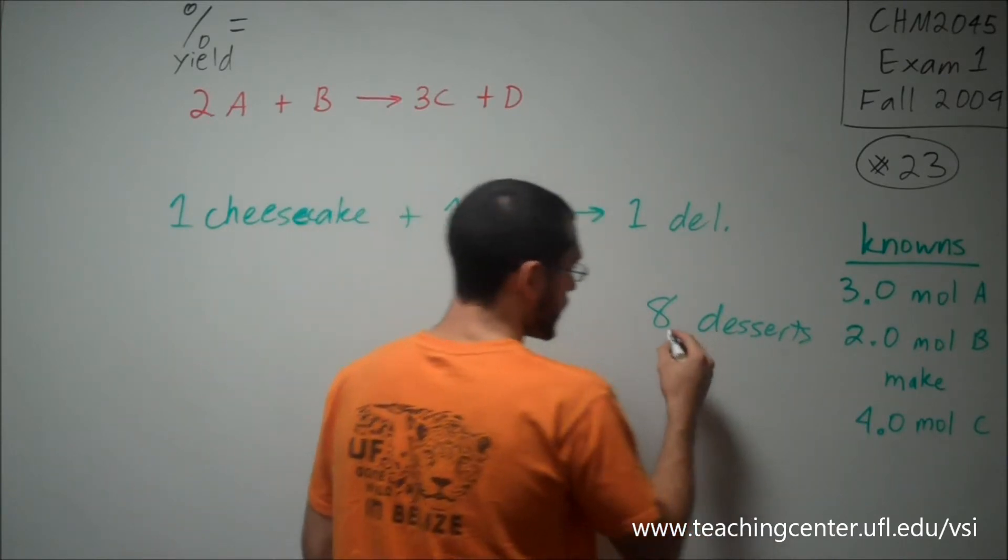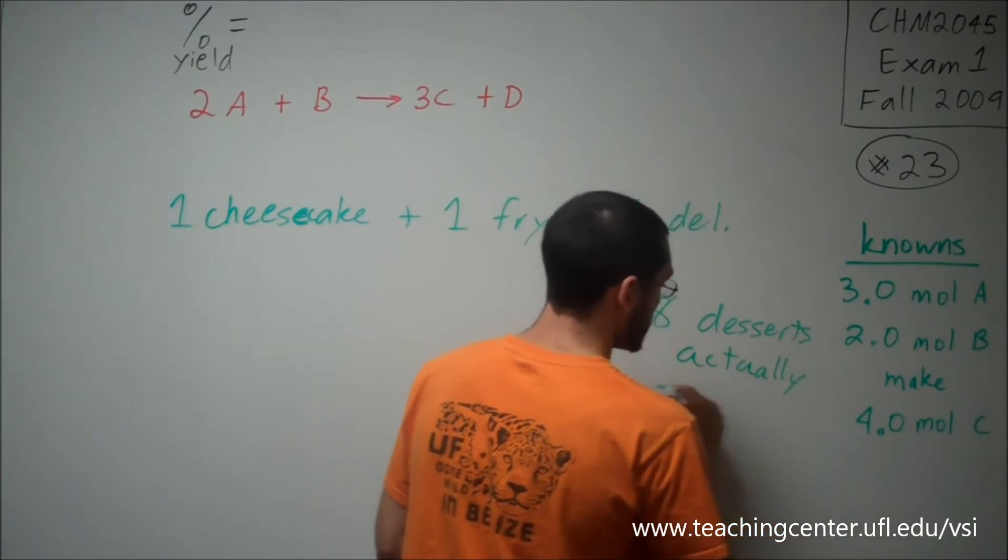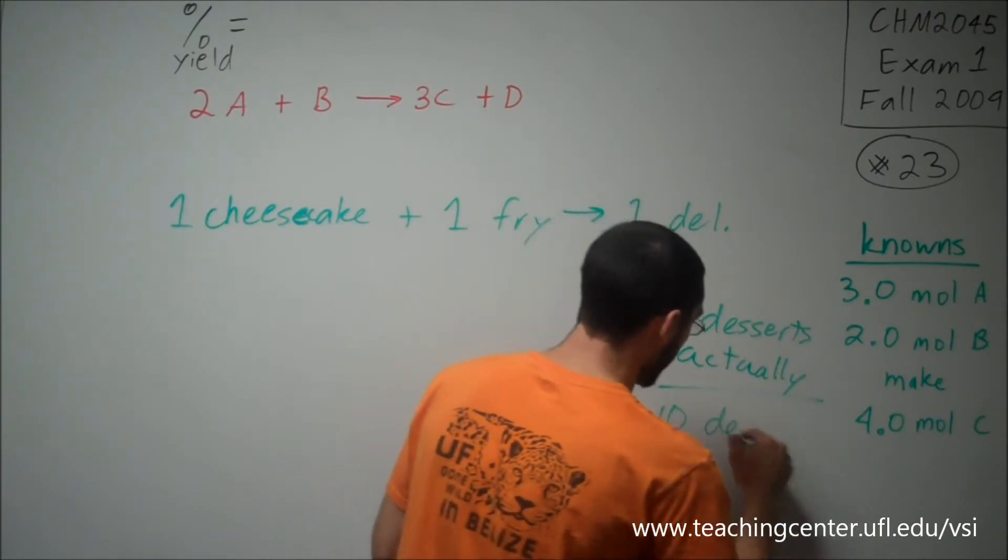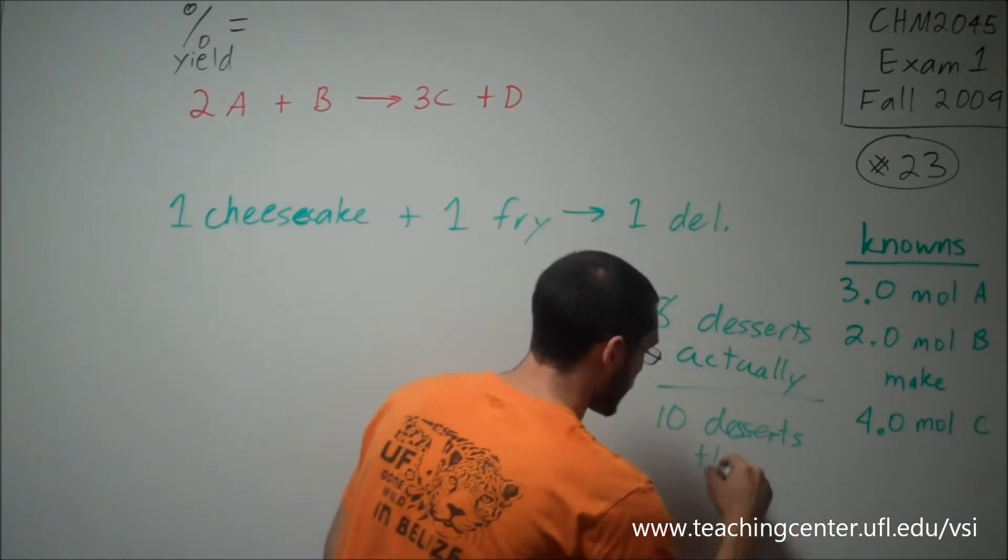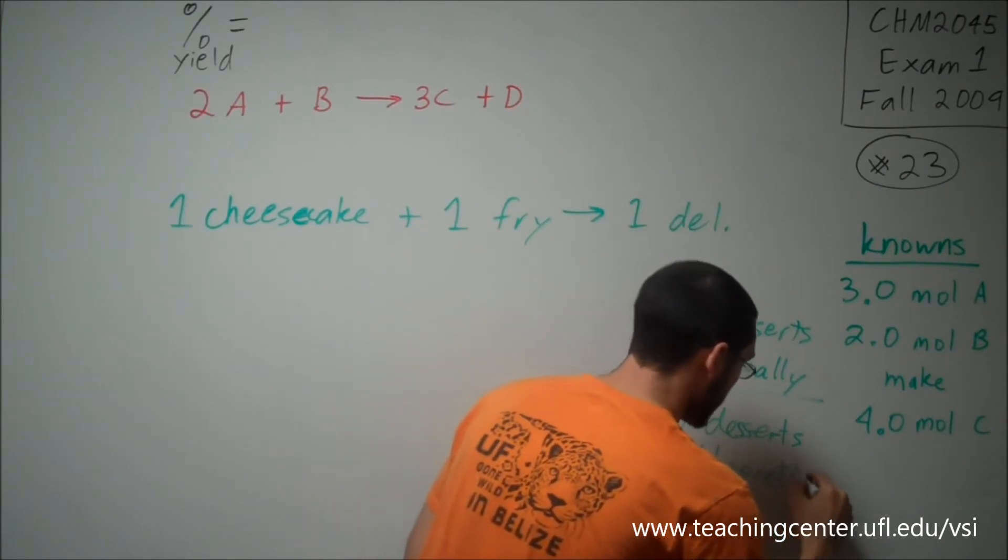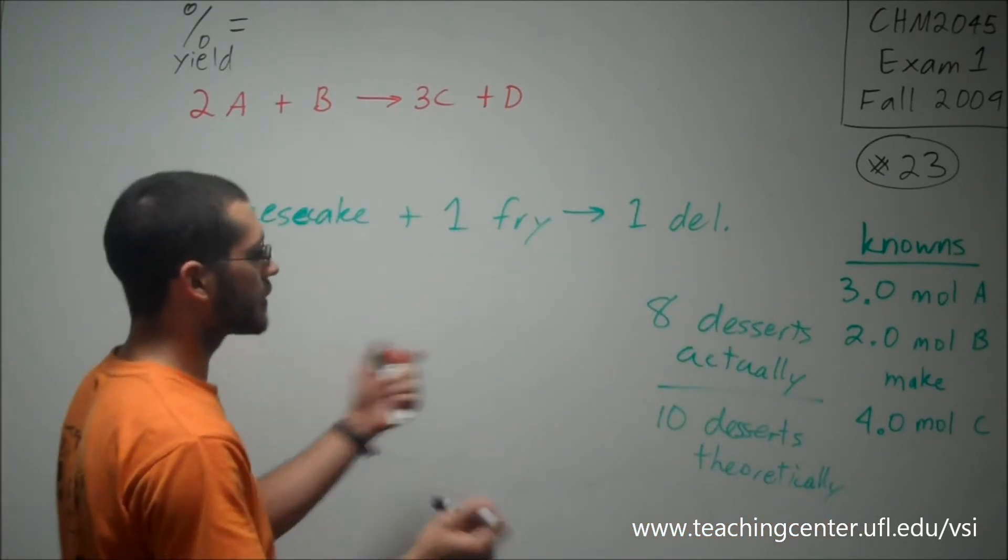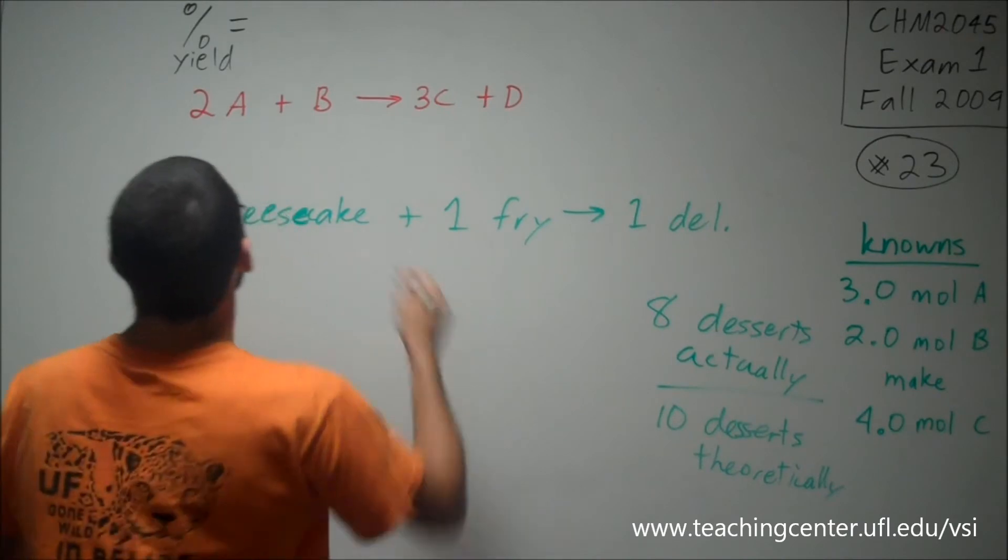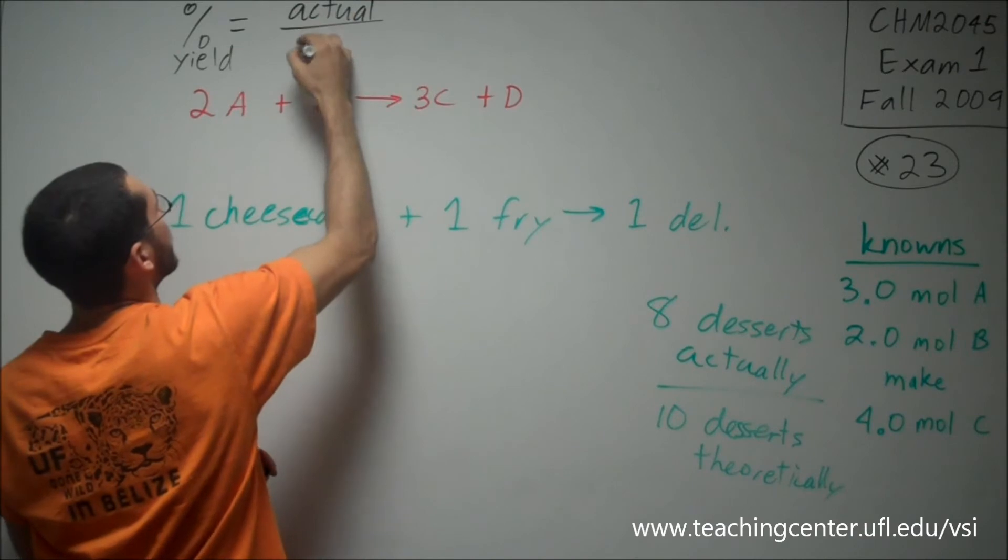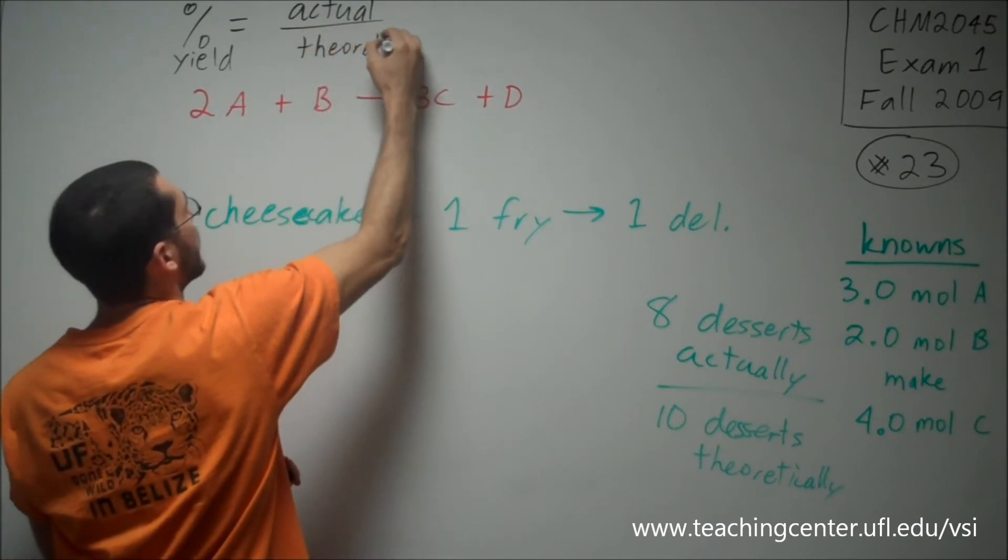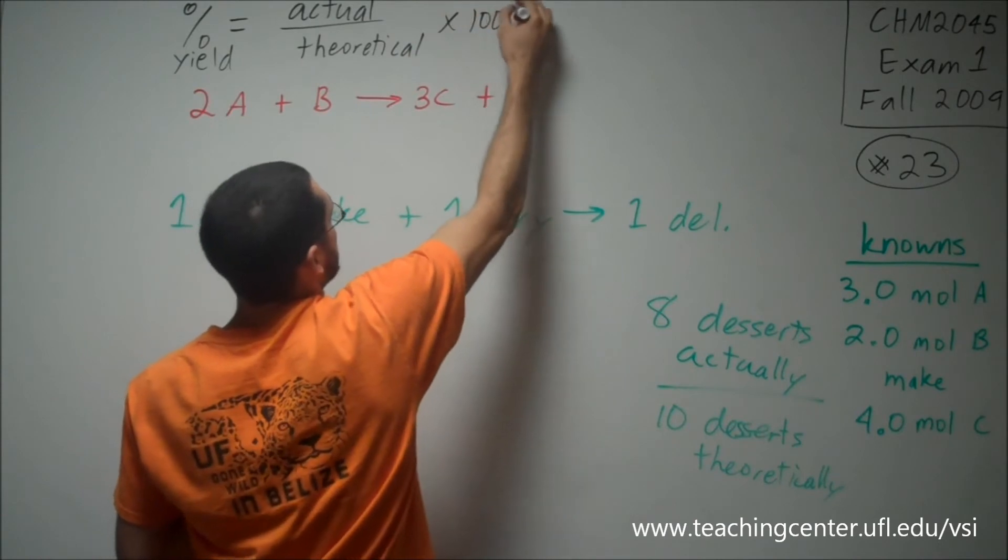So essentially, the eight desserts that I actually got divided by the ten desserts I could have made theoretically gives me percent yield. So that makes sense, right? So percent yield is your actual divided by your theoretical. And then if you want to turn it into a percent, you just multiply it by 100%.